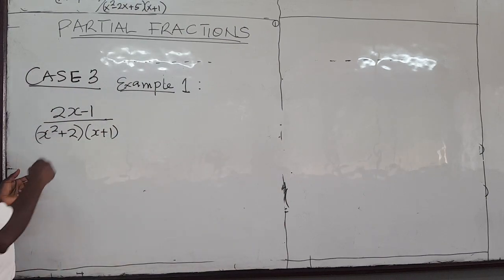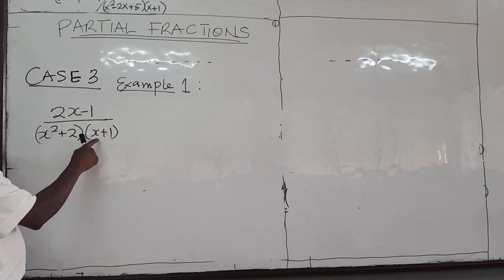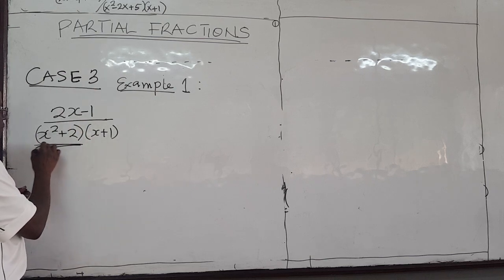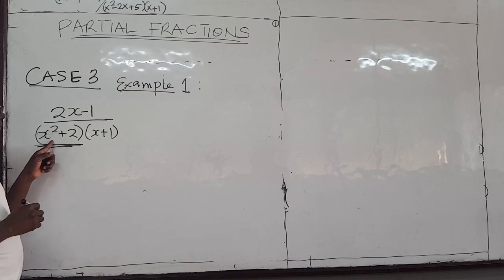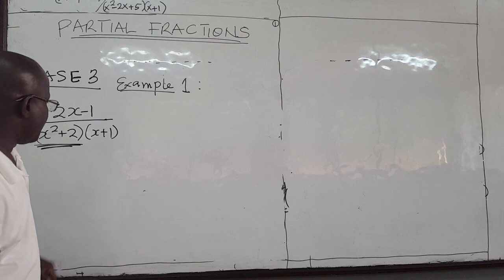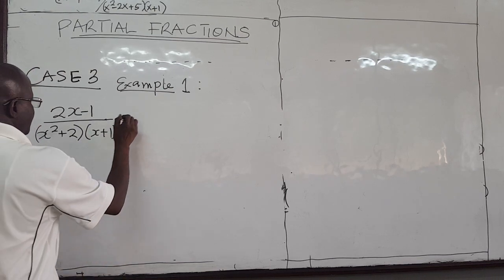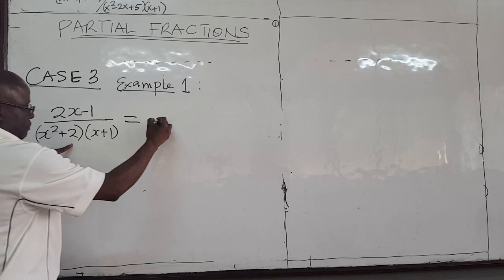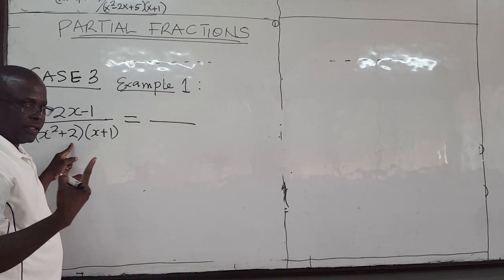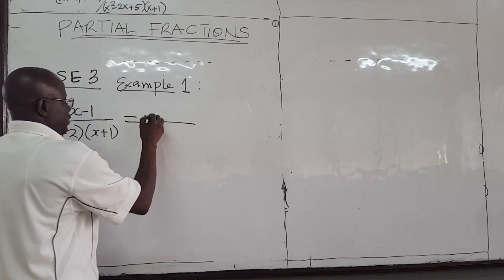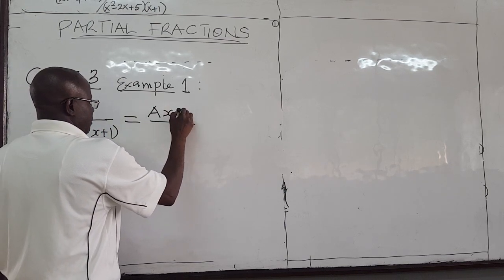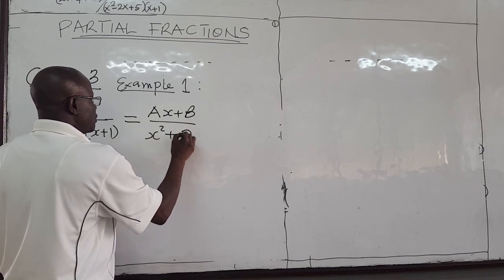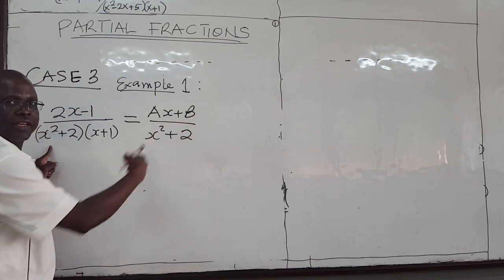Take a look at this. You have 2x minus 1 over x squared plus 2, times x plus 1. This falls in this category because x squared plus 2 cannot be reduced. And so because of that, you have to rewrite it. Write this equal to — because this is a quadratic and it's irreducible, up here you no longer have a constant. You need a linear expression: some ax plus b, all over the quadratic x squared plus 2. This is because this factor is irreducible.